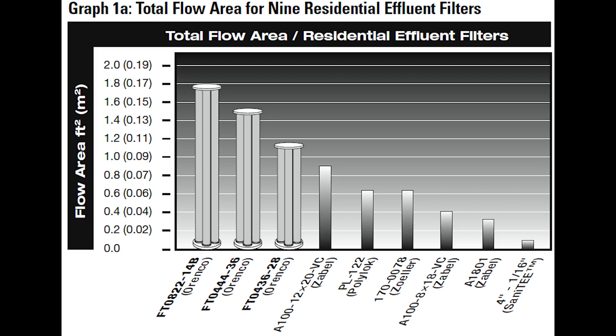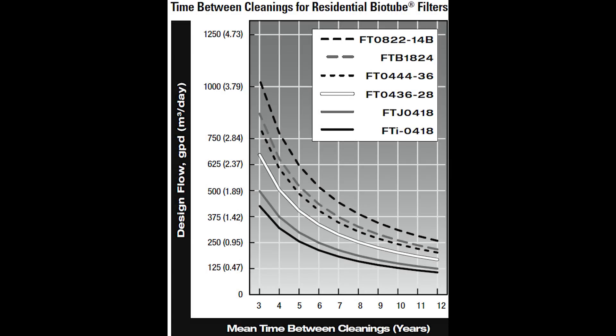From the graphic comparing residential effluent filters, the Orenco — the most common one being the one second from the left — has a considerably higher total flow area compared to some of the other brands listed. That basically translates to significantly increased time in service and less time spent maintaining the filtration system. The larger your filter, the less frequently you have to maintain it, so getting a larger filter makes sense.